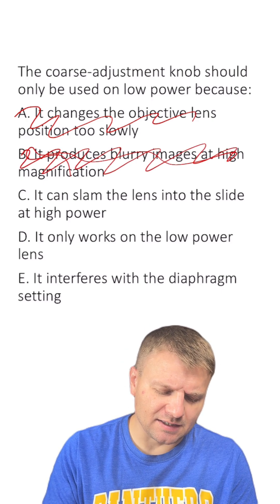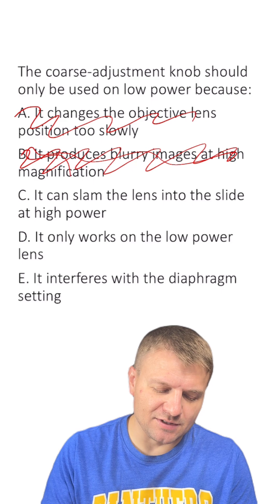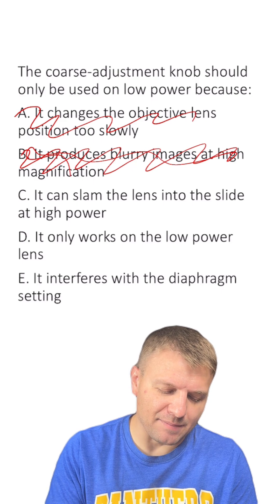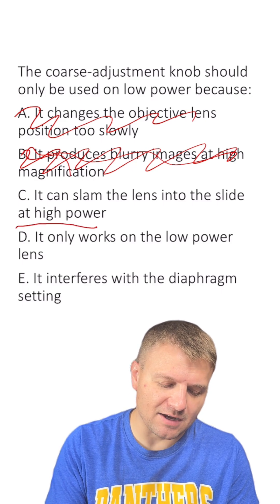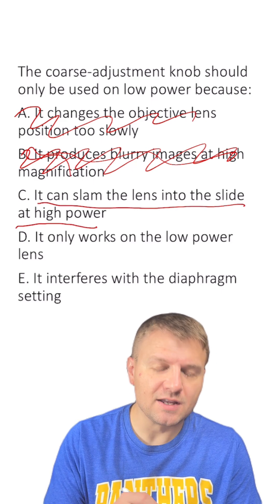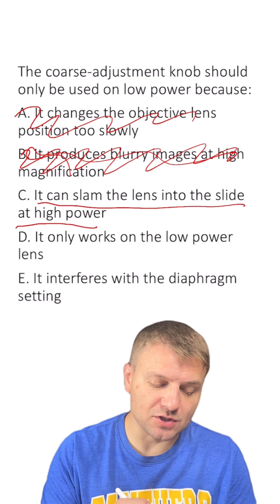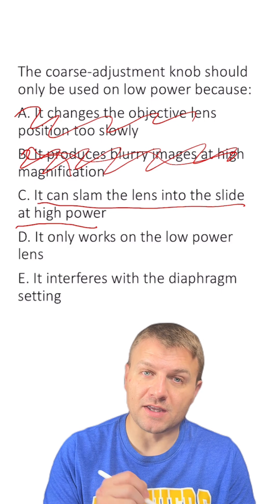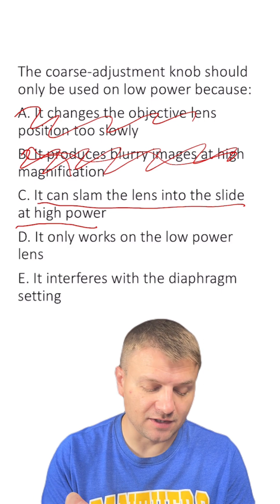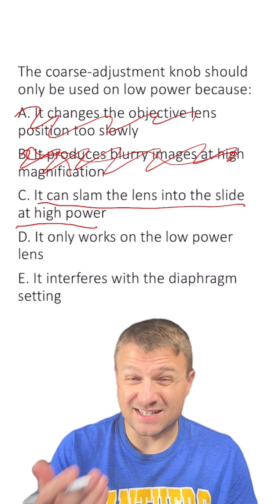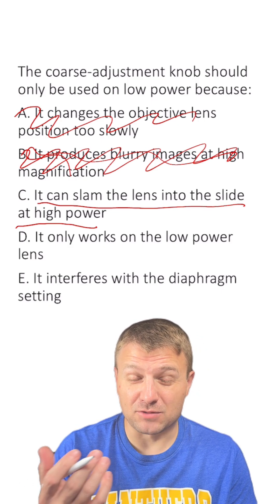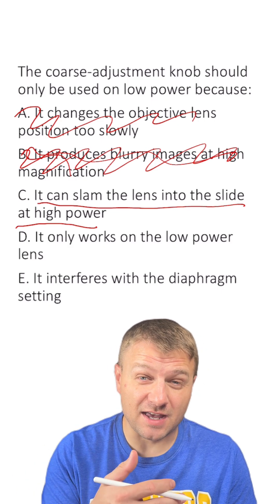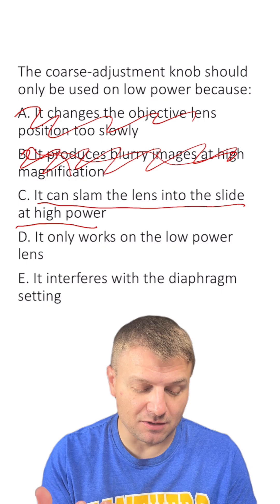C: it can slam the lens into the slide at high power. That sounds like our reason. If you use the coarse adjustment knob on the high objective lenses, it can slam the objective lenses into the slide.